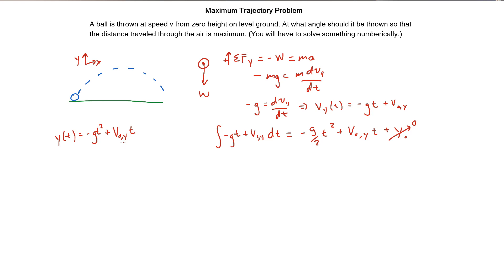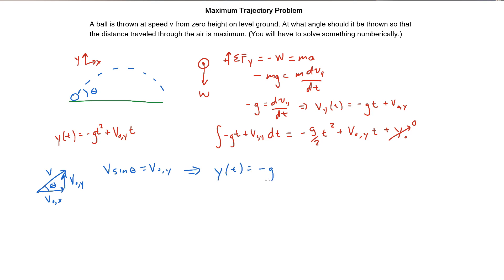Let me derive the trajectory equation since I don't remember the physics equation off the top of my head. I solved for the position in the vertical direction. This is the initial velocity in the vertical direction. Let's define angle theta: if I create a right triangle, v_y = v·sin(θ) and v_x = v·cos(θ). So y(t) = -½g·t² + v·sin(θ)·t. This gives us the trajectory of the path but doesn't tell us how far the ball has traveled.